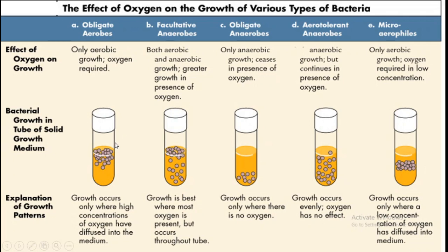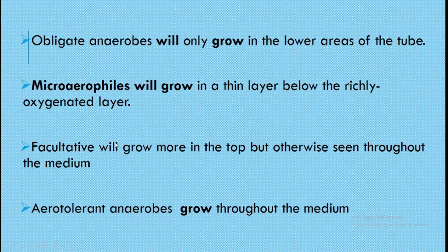Aerotolerant anaerobes are simply not bothered whether oxygen is present or not, so they grow uniformly well throughout the culture medium in the tube. Microaerophils require a little lesser amount of oxygen than the atmospheric level, so they do not grow on the topmost layer — they are seen a little lower from the topmost richly oxygenated layer. Thus, obligate anaerobes grow only in the lower areas, microaerophils will grow in a thin layer below the richly oxygenated layer, facultative anaerobes grow more at the top but also throughout the medium, and aerotolerant anaerobes grow throughout the medium.